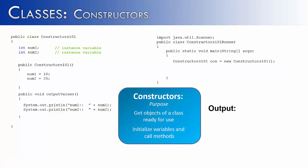Now that we know the constructor is being called, let's call the method outputValues using the object name con. We know that the constructor works because when we call outputValues, we don't see num1 and num2 equaling 0 — we see them equaling 10 and 20. So that's really the first purpose of a constructor: to initialize variables, usually the instance variables.